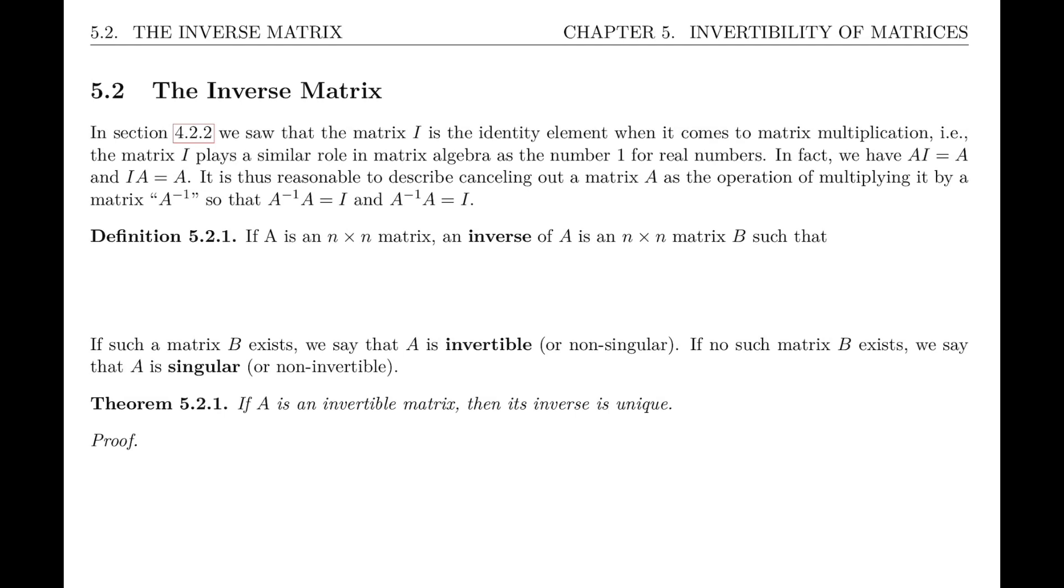So back in chapter 4, remember that we defined the matrix I as the identity element for matrix multiplication. That's a matrix that has the same role as the number 1 for real numbers. Which means we expect that when we multiply A times I, we'll get A. And if I multiply I times any matrix A, it'll also give me A. Notice here the I is not necessarily the same size, depending on whether it's on the left or on the right, if A is not a square matrix.